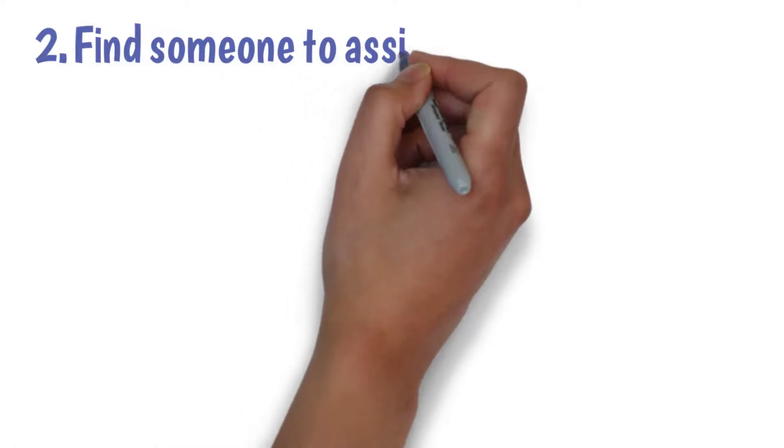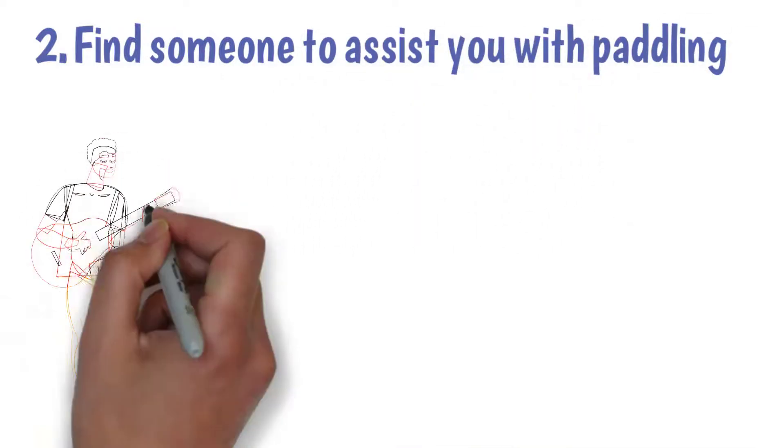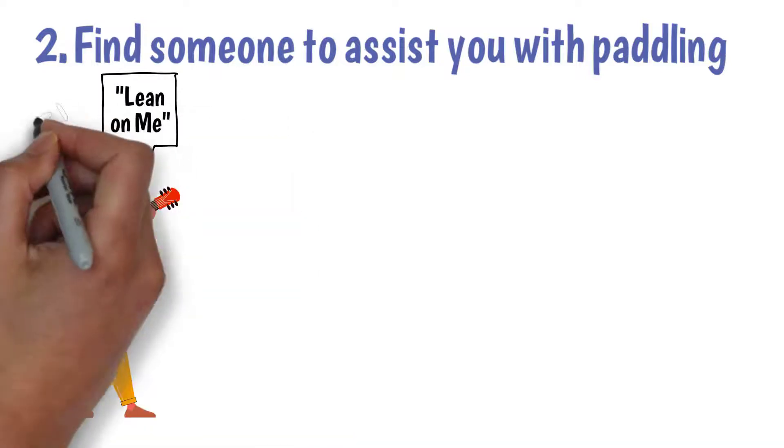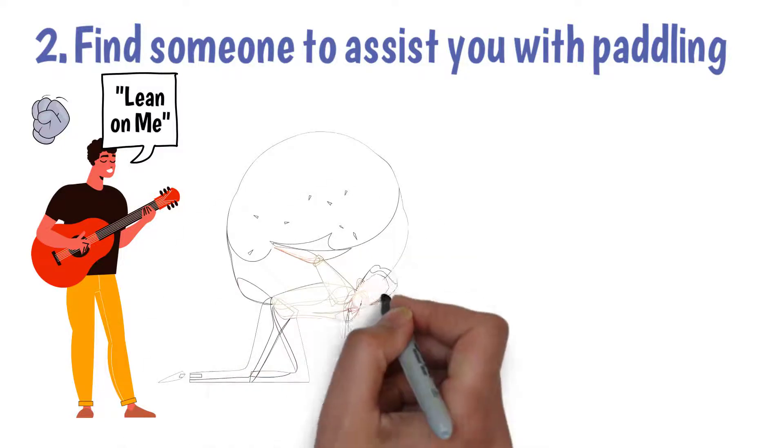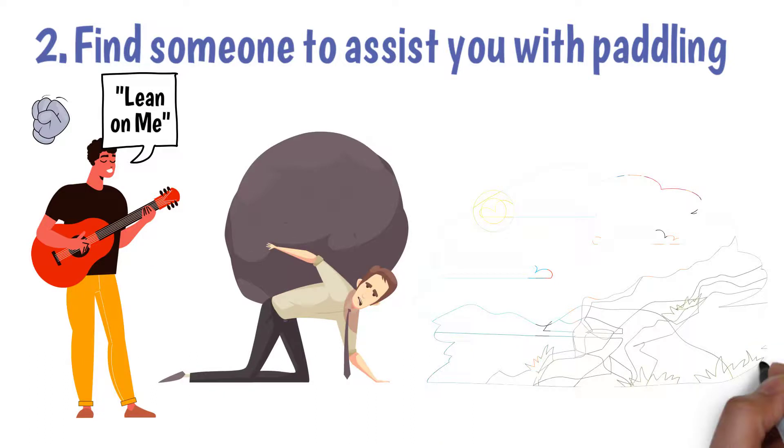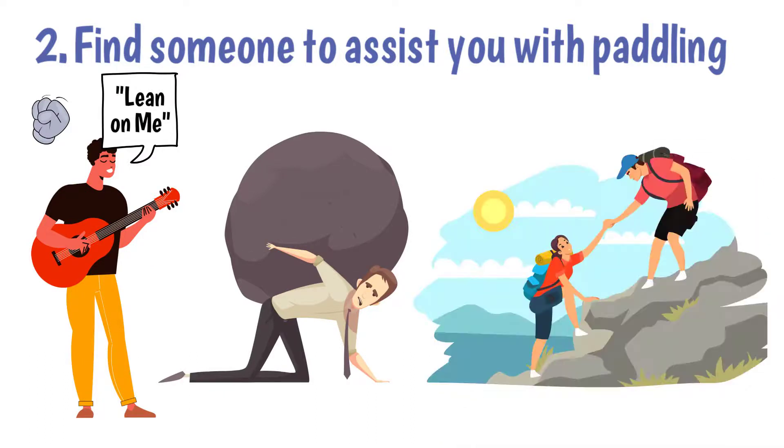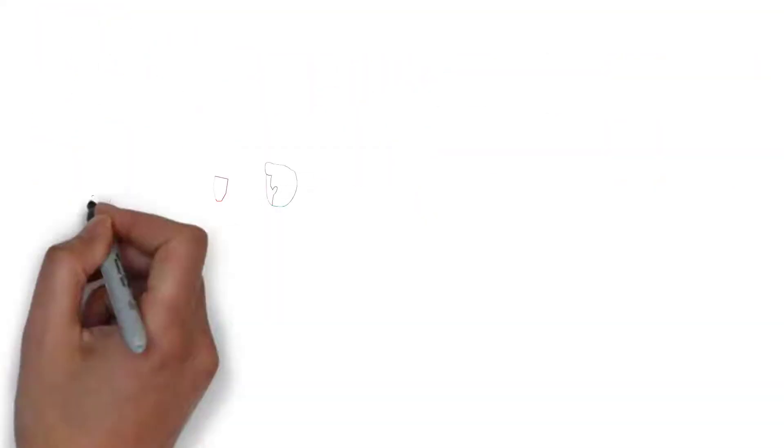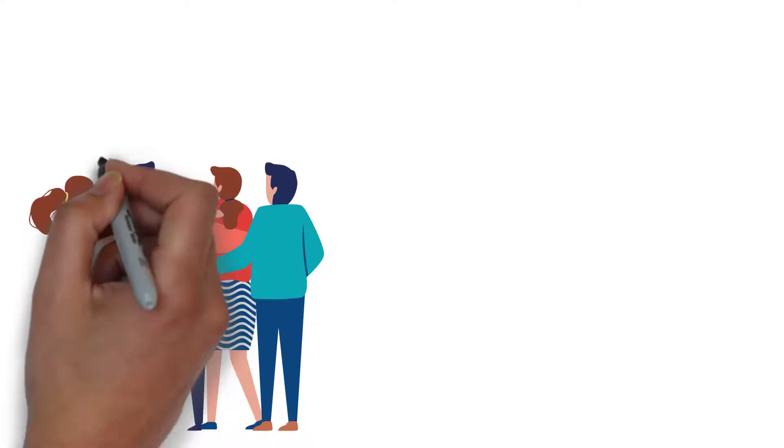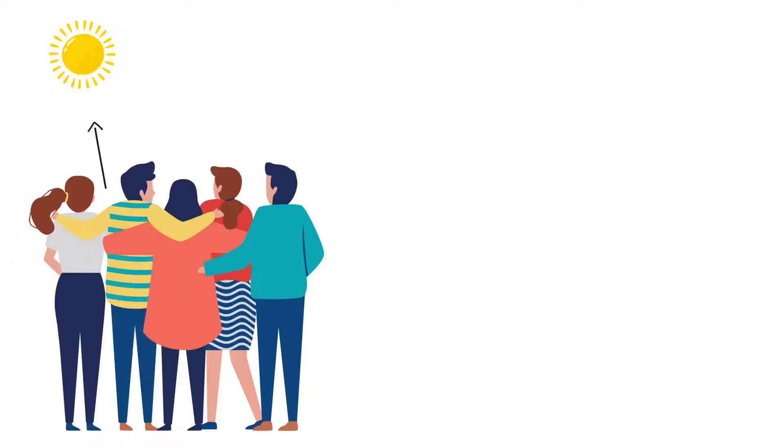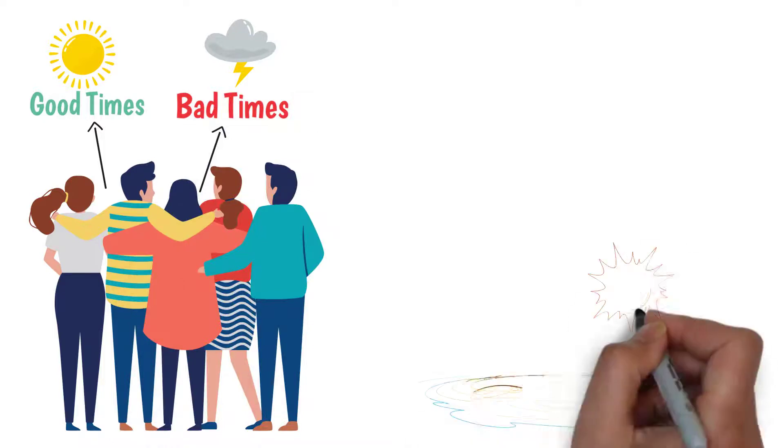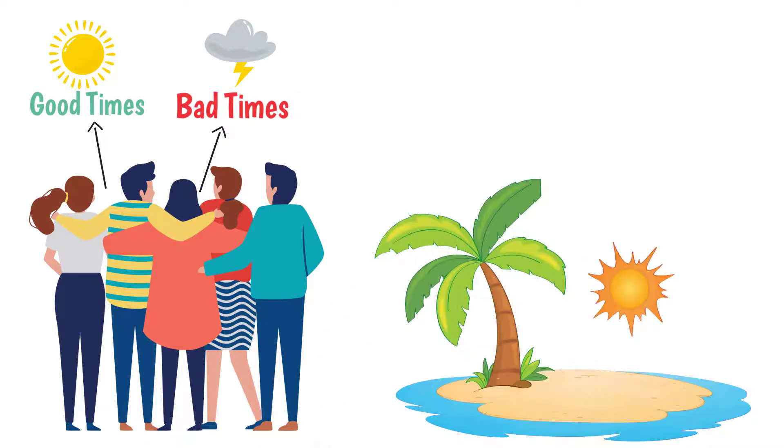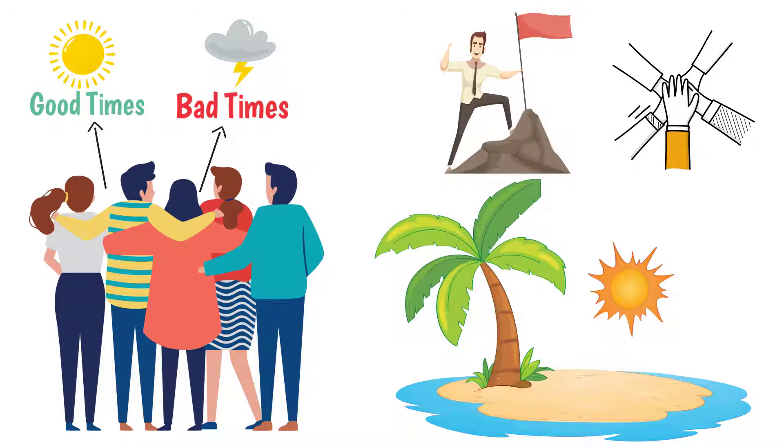Find someone to assist you with paddling. When Bill Withers sang the song Lean on Me, he reminded us of the importance of friends and support systems in our lives. You are bound to face challenging times in life that require you to rely on others. This will necessitate teamwork with the right people, which is extremely important for achieving your goals. Find someone you can turn to in difficult times. Friends should not only be there in the good times. True friends are also there to help you through the bad times. Remember that no one person is an island. Everyone needs a little help from others sometimes.